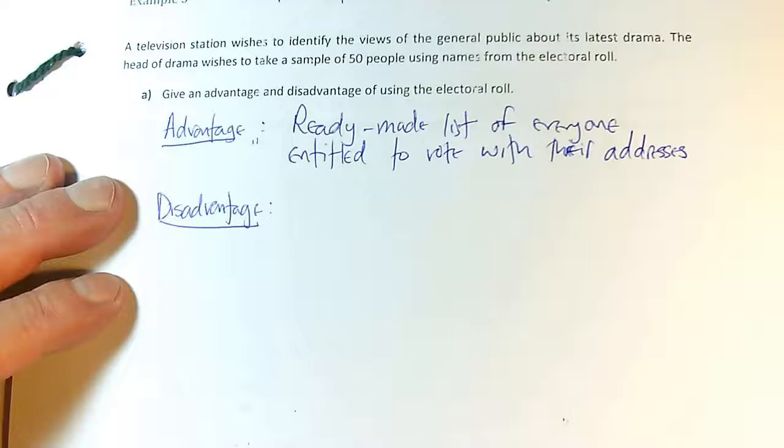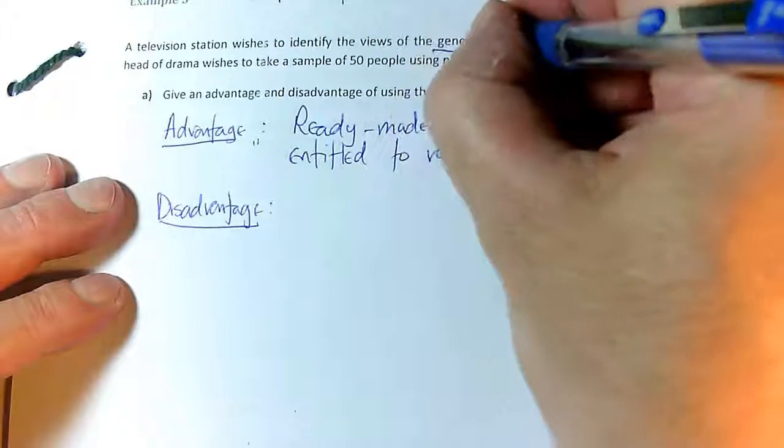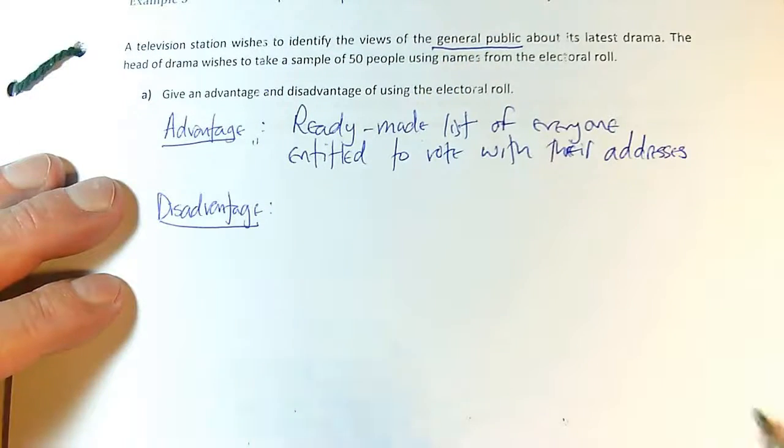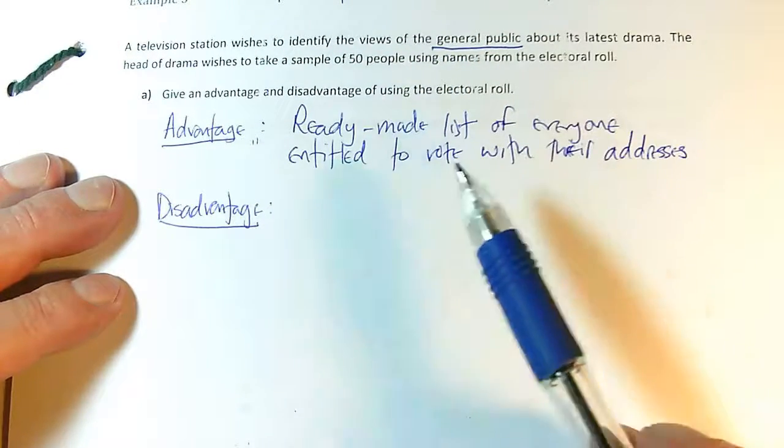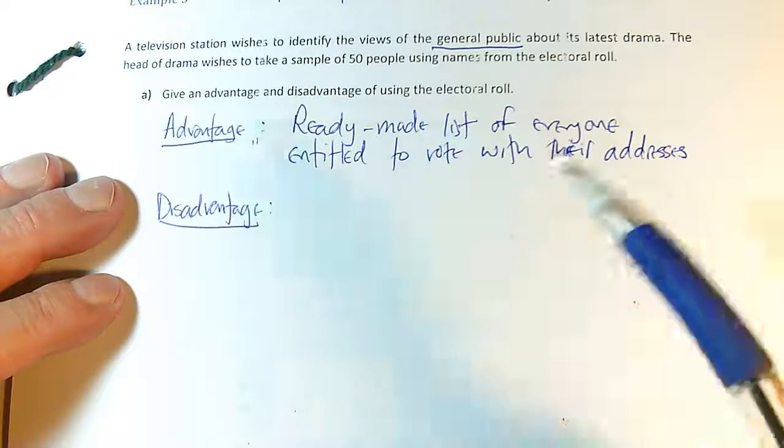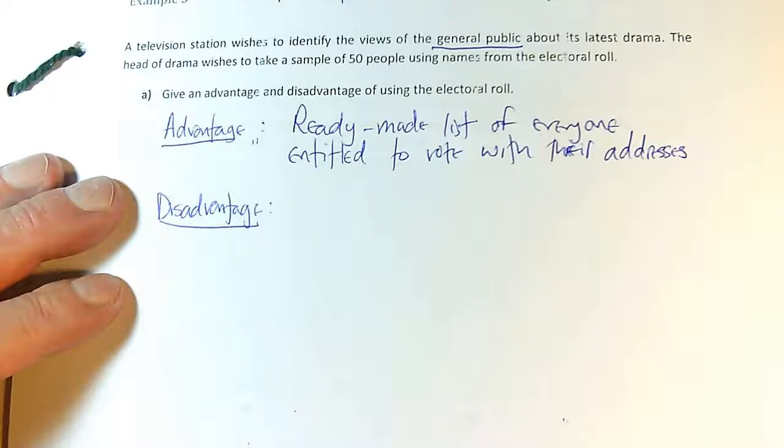So what could possibly be the disadvantage? Well, we've got to be really careful, as always, with what our population is. Our population is the general public. Now, does our general public correspond to all the people entitled to vote in a particular constituency? And the answer to that is no.